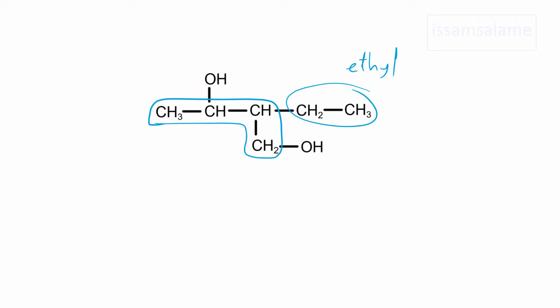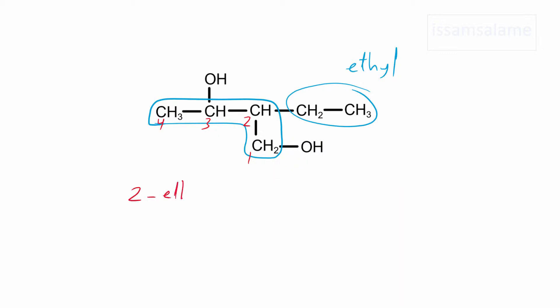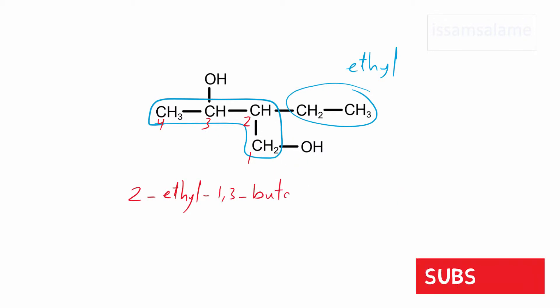When numbering the carbon atoms, we number from the end that gives the two hydroxyl groups the lowest possible numbers. If we start from the left, the hydroxyl groups are at carbons 2 and 4. If we start from the right, they are at carbons 1 and 3. So we start from the right side, and the name is 2-ethyl-1,3-butanediol.